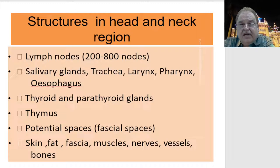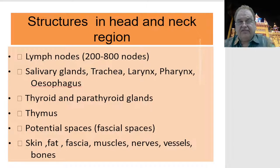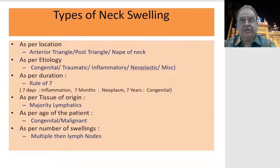Look at the complex anatomy of the neck. Almost about 200 to 800 lymph nodes are there in the neck. There are salivary glands, the trachea, the larynx, the pharynx, the esophagus, certain glands like the thyroid, parathyroid, and thymus, various potential spaces, and apart from the basic structures — the skin, fat, fascia, muscles, blood vessels, and the bones.